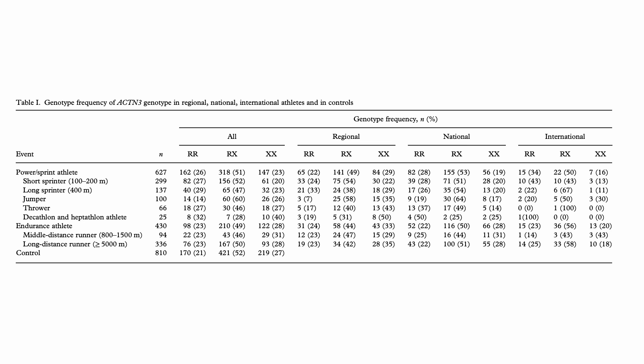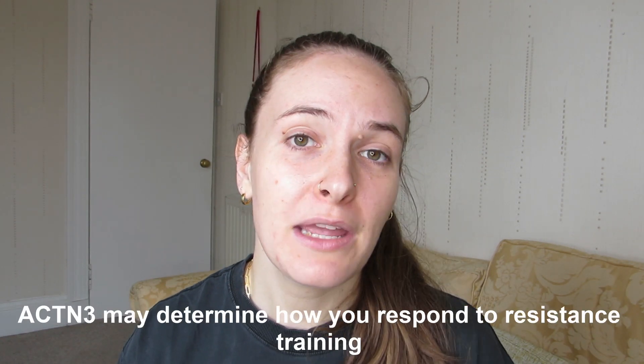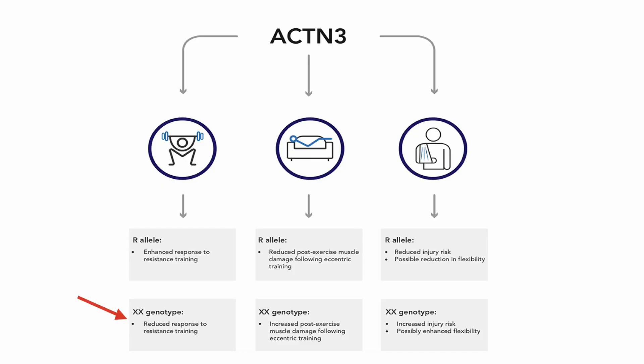One last thing I'll show you is a table showing the presence of different genotypes within different levels of competition — a similar pattern emerges there. While this is really cool, it begs the question: how is this relevant to those of us who are not olympians? It's relevant because the ACTN3 gene may also determine your responsiveness to resistance training. Pickering and Keely have proposed that the RR allele — the one we want for strength and power — is associated with enhanced responsiveness to resistance training, reduced muscle damage after eccentric exercise, reduced injury risk, and reduced flexibility. The XX genotype, on the other hand, is associated with reduced responsiveness to resistance training, increased muscle damage after eccentric exercise, increased injury risk, and increased endurance and flexibility.